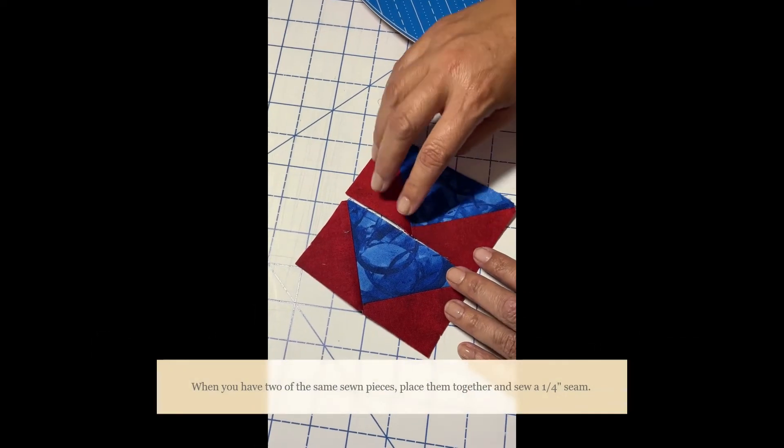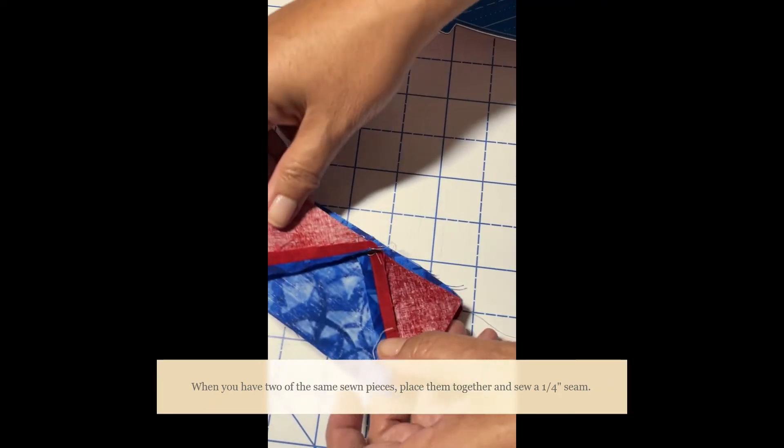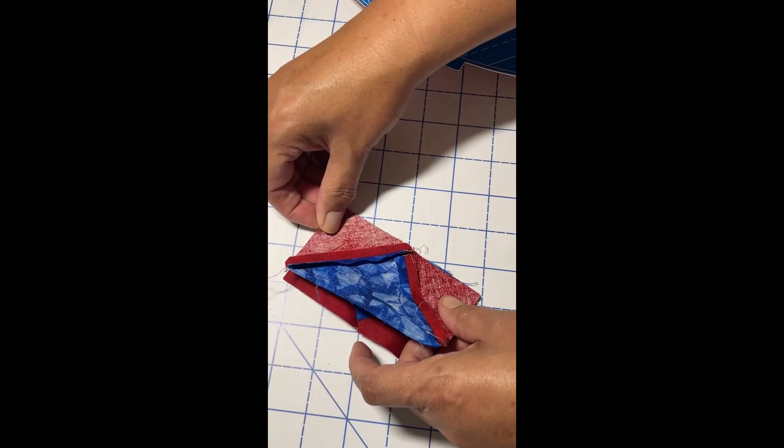So as you can see, I've got my seam allowance all built in and when I sew these together I'm going to get those nice points.